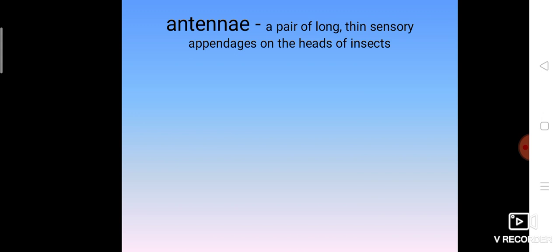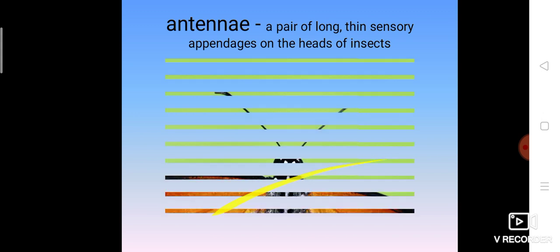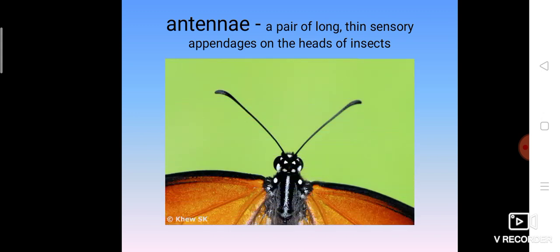The next word is antony. Antony meaning a pair of long thin sensory appendages. A butterfly, we can easily find a pair of long thin sensory appendages. They are called as antony.